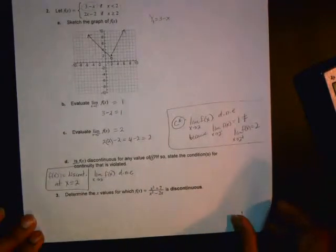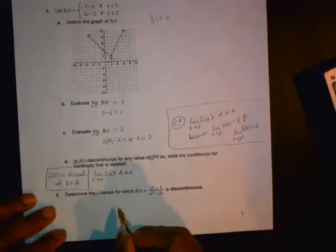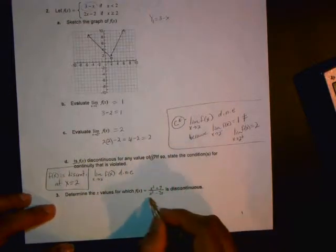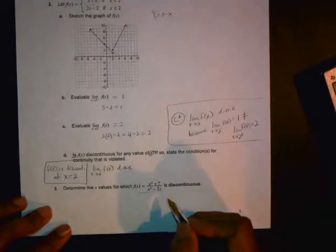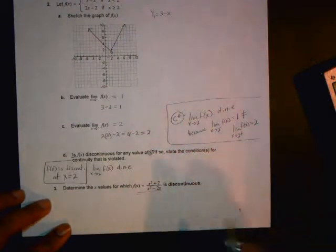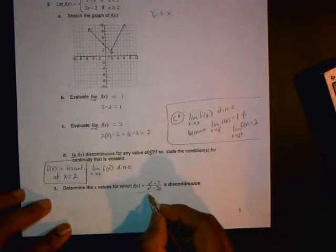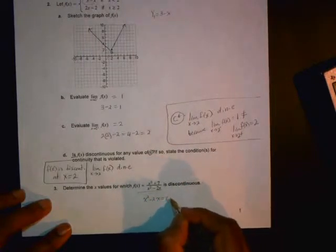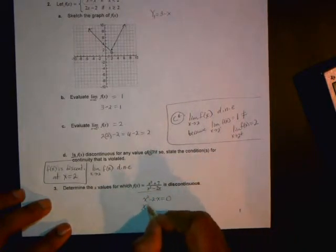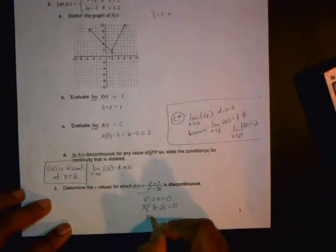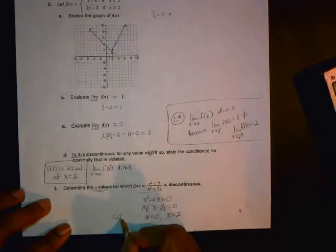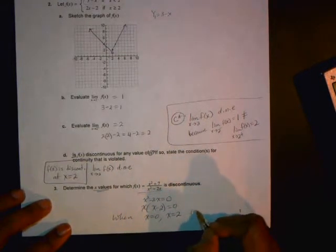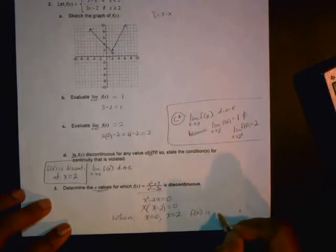One more question on this page and we'll wrap it up. Determine the x values for this function where it is discontinuous. Since it's a rational function, discontinuity will occur when you have a zero in the denominator. So take a look at when will this be zero. So x squared minus 2x equals zero. Factor out an x and you get x is zero or x is two. So you would say these are the x values when x is zero and x is two, f of x is discontinuous.